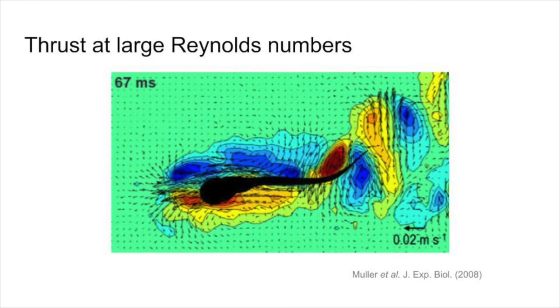As previously mentioned, the way thrust is produced for large Reynolds numbers is well understood. Take the flow field around a small fish, for example. In this image, we can clearly see the vortices that form in the fluid around the tail of the fish as it moves.